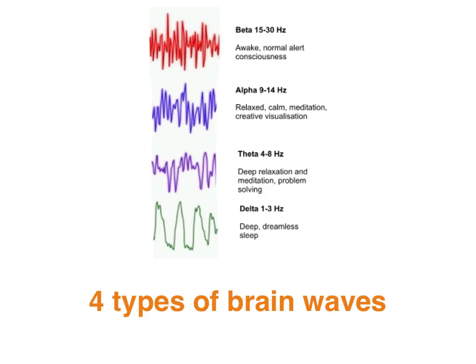Based on the frequency of the EEG patterns, we have four types of brain waves. Beta brain waves range from 15 to 30 cycles per second and are characteristic of an alert state. Alpha brain waves range from 9 to 14 cycles per second and occur in a relatively relaxed state. Theta brain waves are 4 to 8 cycles per second in a meditative state. Delta brain waves, experienced only in deep sleep, are 1 to 3 cycles per second with minimal brain activity.